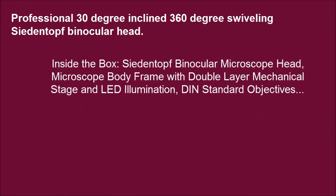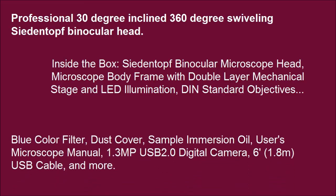Inside the box: a binocular microscope head, microscope body frame with double layer mechanical stage and LED illumination, DIN standard objectives, blue color filter, dust cover, sample immersion oil, user's microscope manual, 1.3 MP USB 2.0 digital camera, 1.8 MP USB cable, and more.